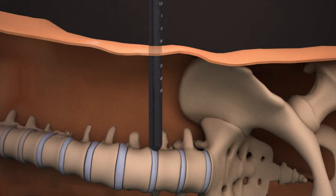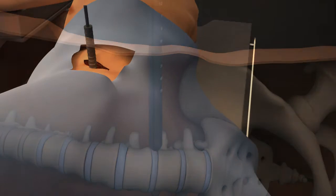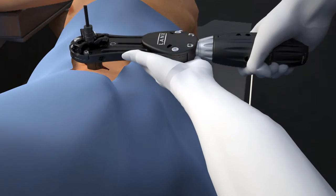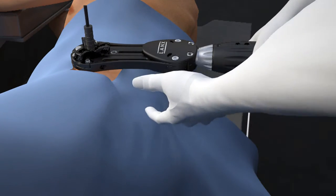Advance the retractor over the second dilator. Employ a rotating motion with downward pressure until the blades are seated on the disc space. Confirm using AP fluoroscopy.